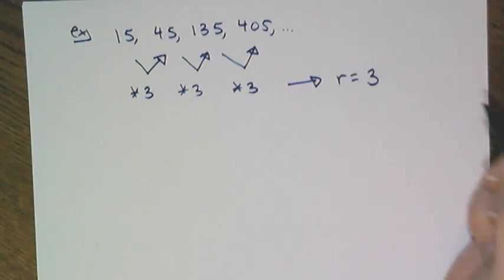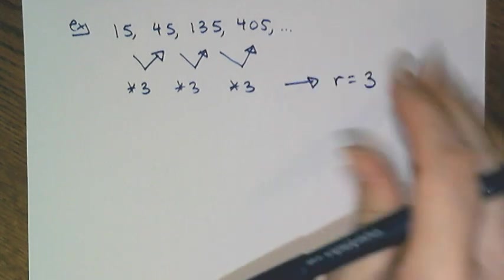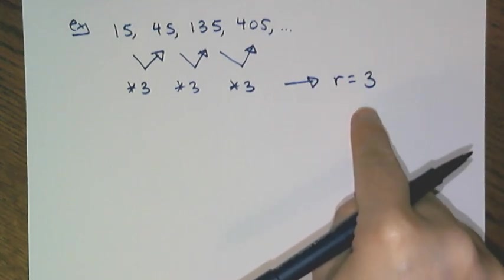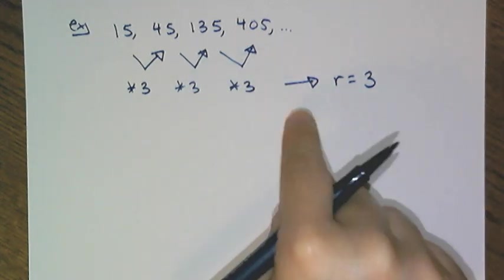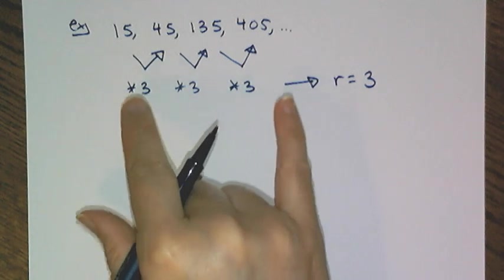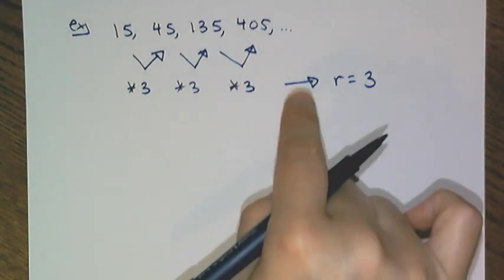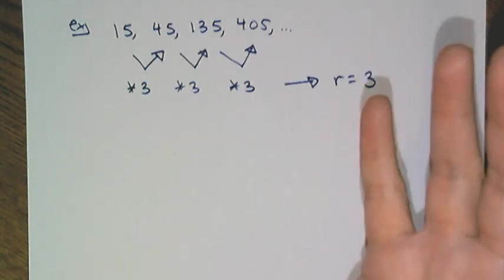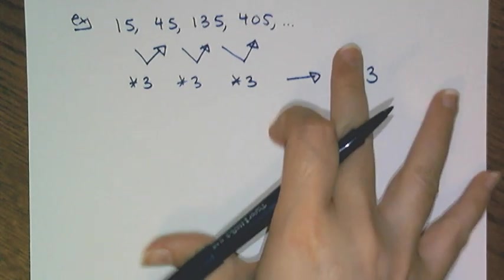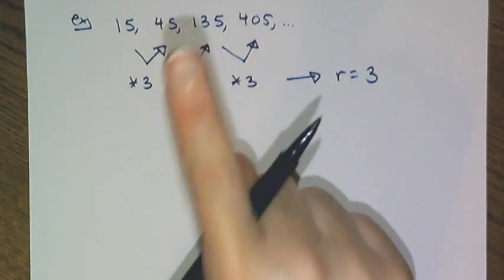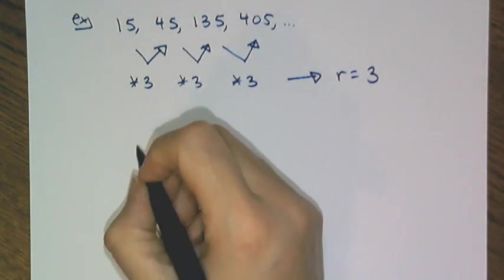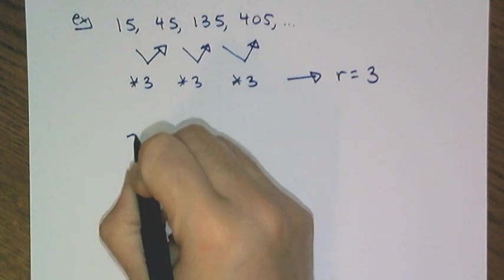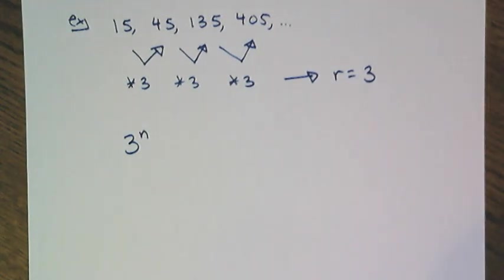From class, you recognized that the common ratio turns into the base of an exponent, because in a geometric sequence, that repeated multiplication is rewritten or can be rewritten as an exponent. So I know, because it's geometric with a common ratio of 3, that my sequence's explicit formula has to have a 3 to the nth power in it.